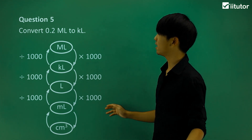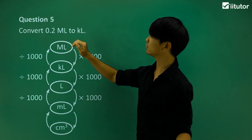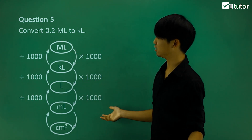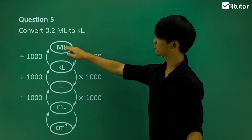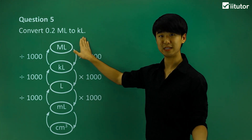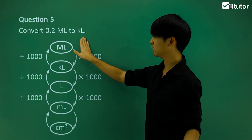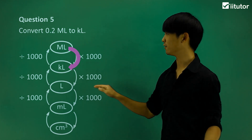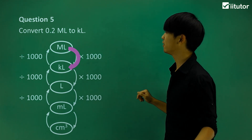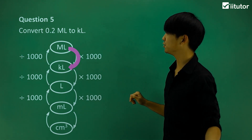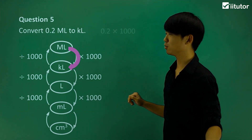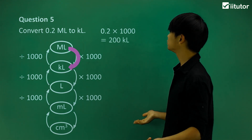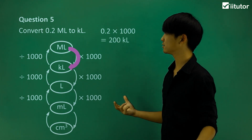Question number five: we're going to convert 0.2 megaliters to kiloliters. That's from megaliters down to kiloliters, so we multiply by 1,000. So 0.2 multiplied by 1,000 is 200 kiloliters.